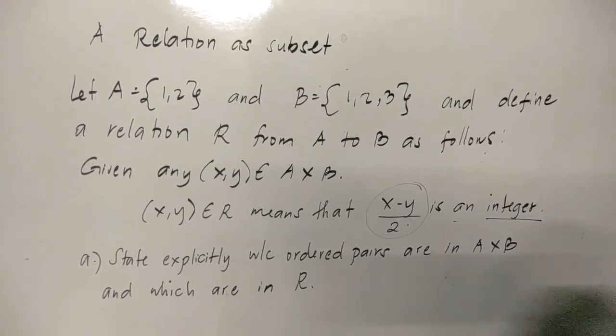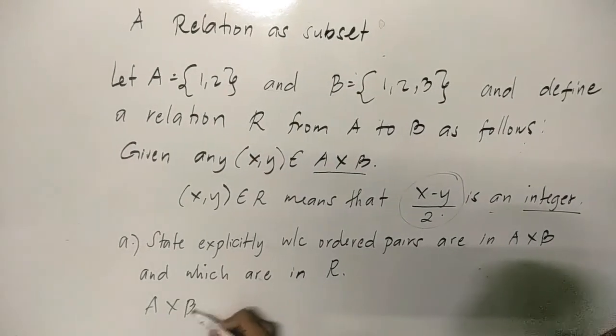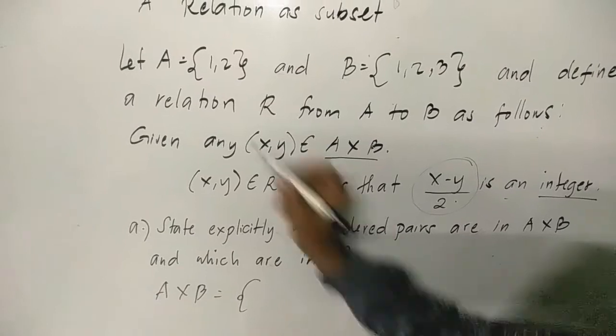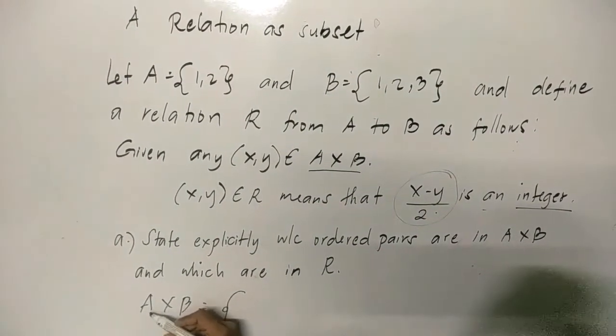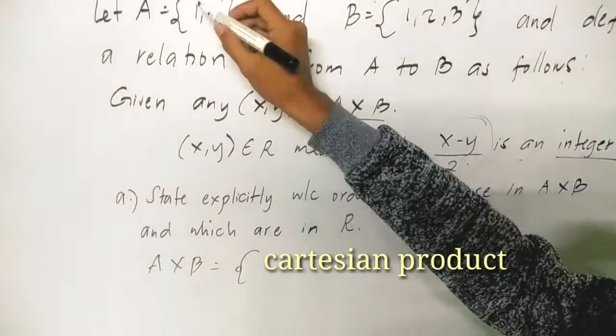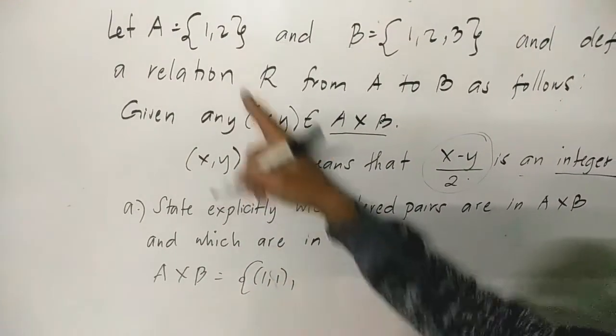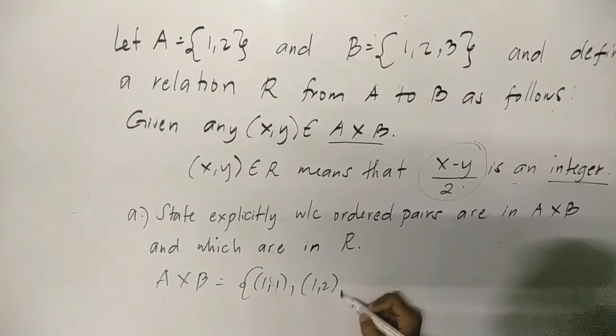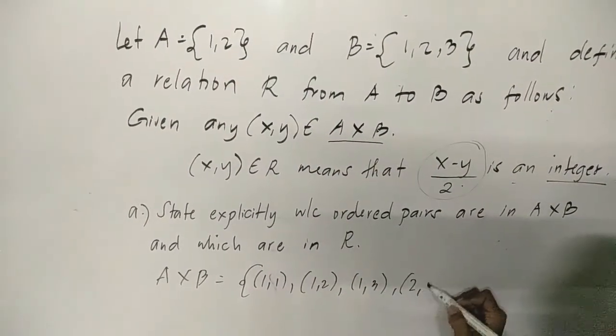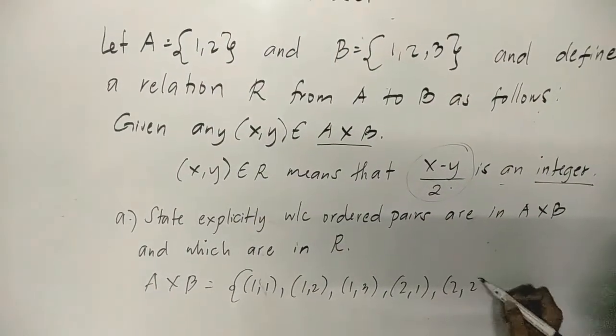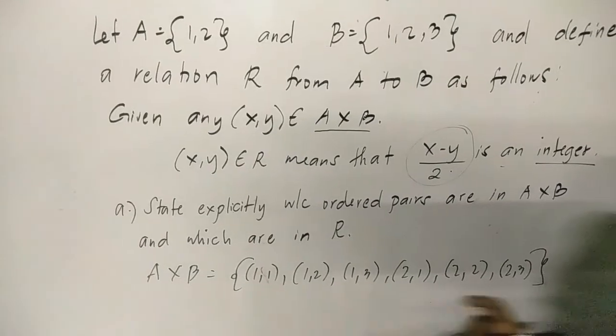First, we'll find A × B. By the way, this is A cross B. Set A has elements 1, 2 and set B has elements 1, 2, 3. By Cartesian product, we have: (1,1), (1,2), (1,3), (2,1), (2,2), and (2,3). So these are our A × B elements. From these values, from these sets or elements, we'll determine which ordered pairs are related to each other by means of this formula.